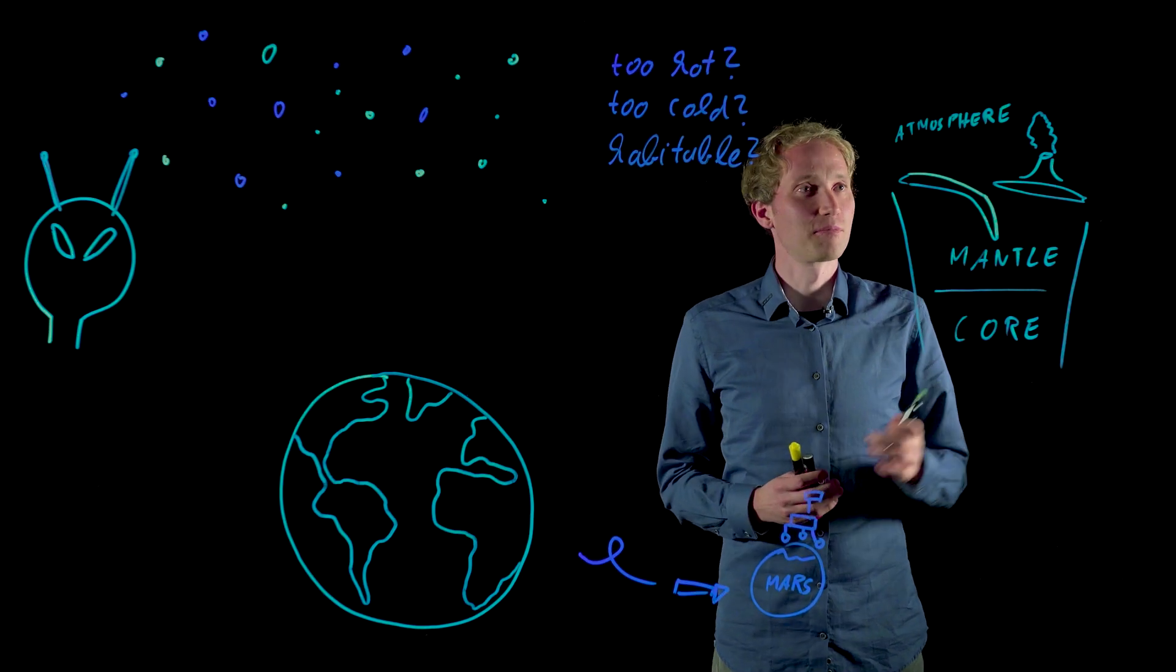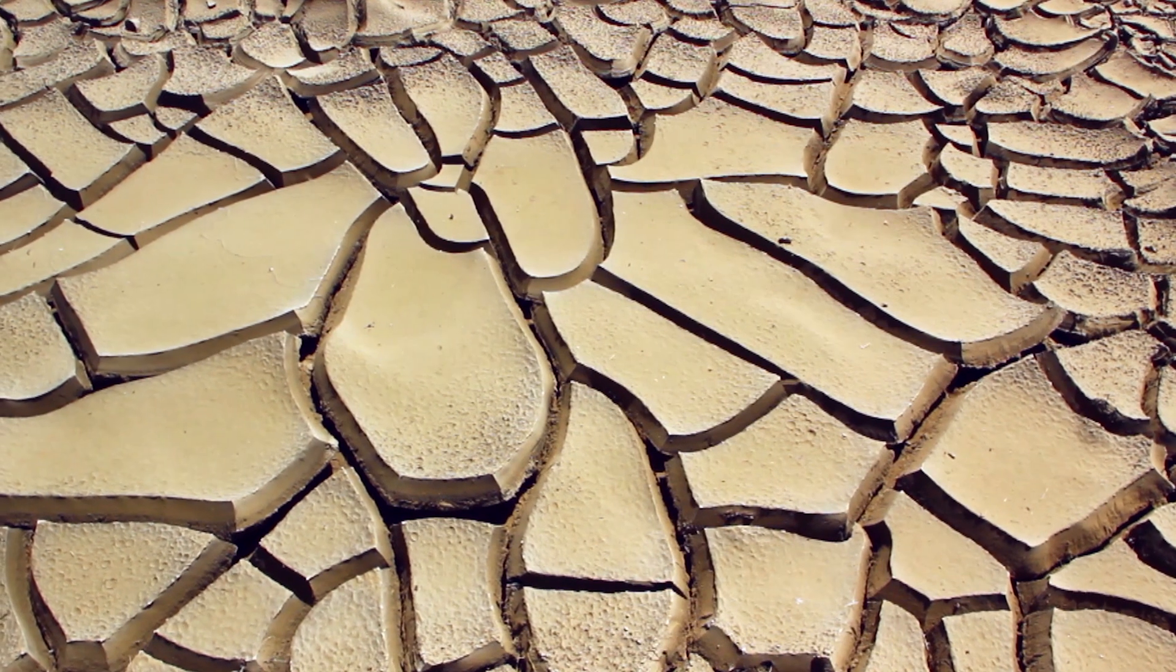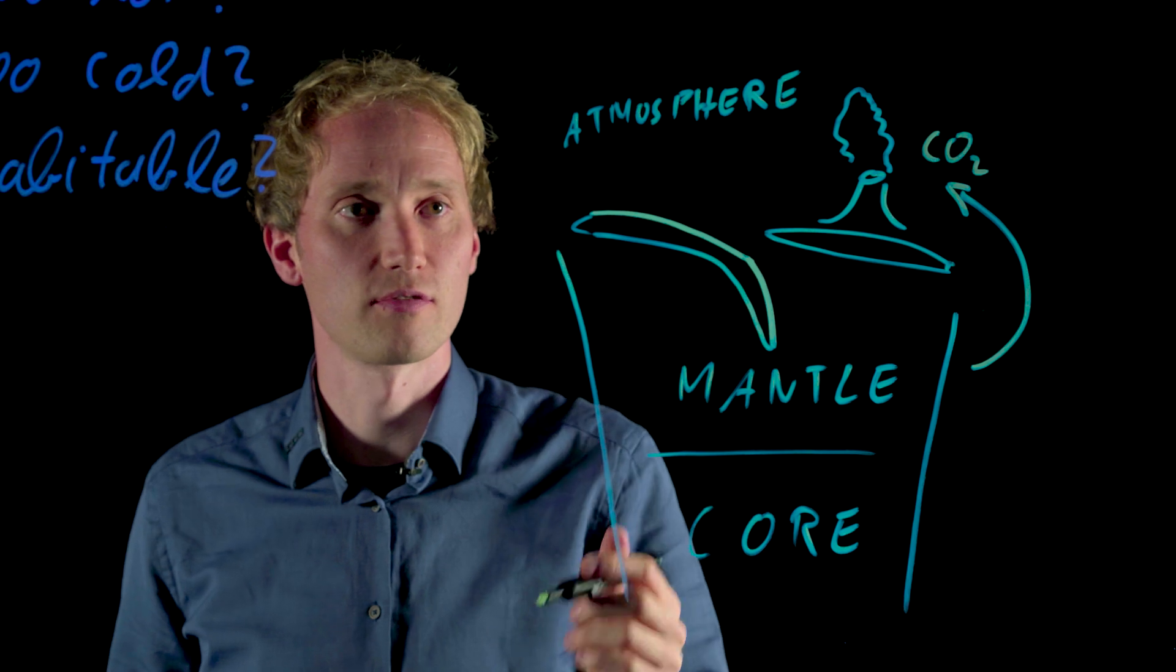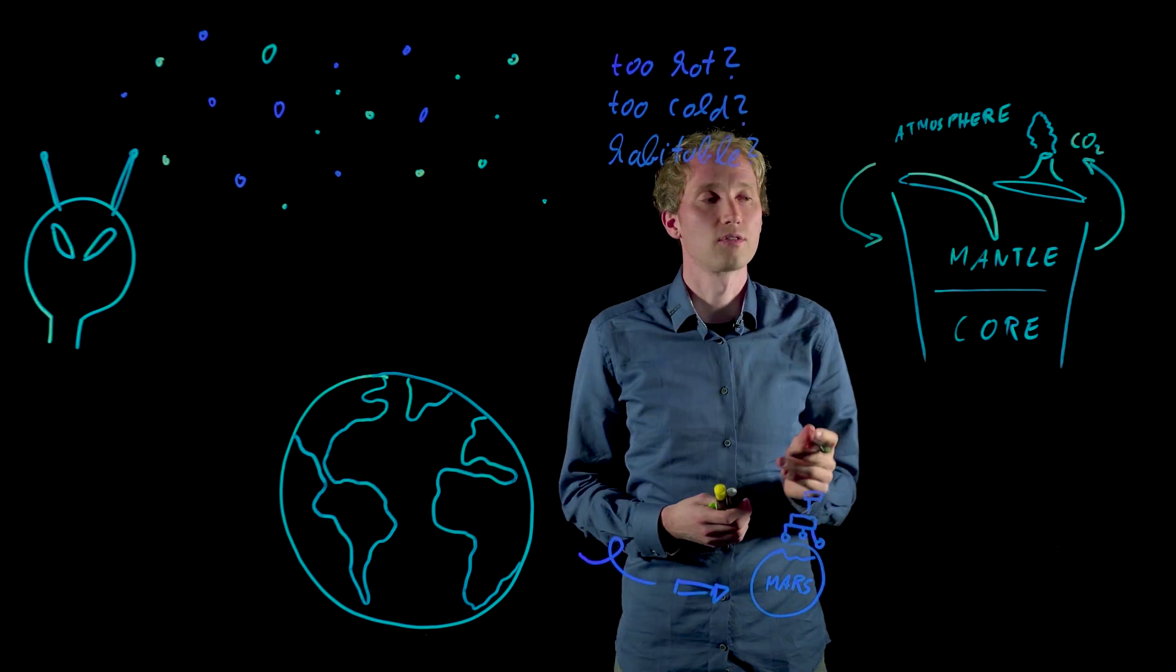Only liquid water in a certain temperature range allows for habitable conditions. I learned that it is a combination of different processes which keeps the Earth habitable in the long term. We have volcanic outgassing of CO2 from the mantle into the atmosphere. We have weathering processes, erosion and subduction of sediments by which CO2 is recycled back into the mantle.